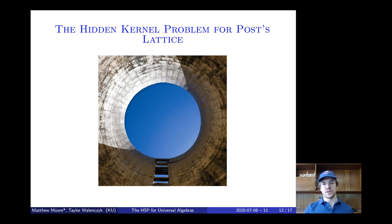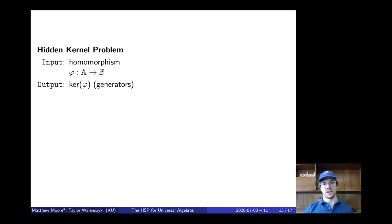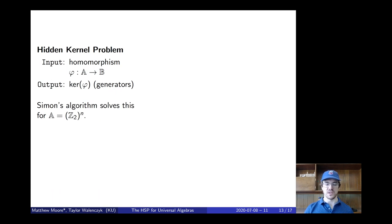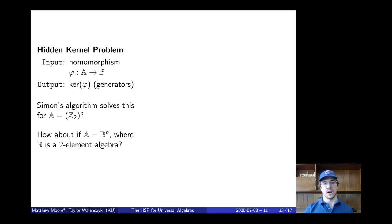Let's now move on to the main results: a complete classification of both quantum and classical complexity of the hidden kernel problem for powers of two-element algebras. Simon's algorithm — really as simple as it gets for the HSP — solves this problem when A is Z₂ to the power of n. So naively, how about we analyze this problem when A equals B to the n, the Cartesian power of a two-element algebra?